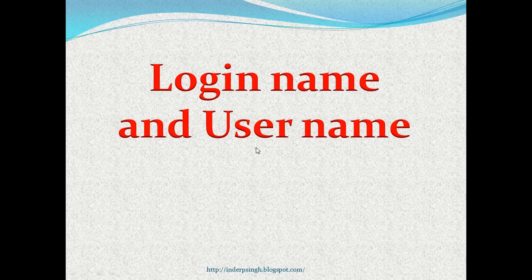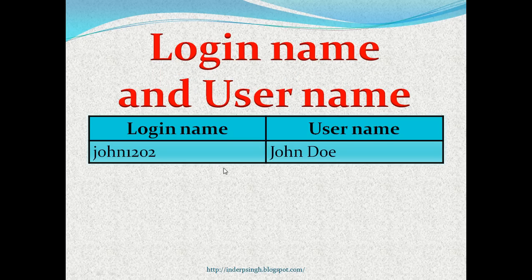Next, login name and user name. Login name is the string with which a user identifies a user internally. Login name may or may not be the same as user name. The user name is a string which the system displays to the user and communicates to other users. For example, John1202 may be a login name and John Doe the corresponding user name. The user would use John1202 to log into the system; however, the system would display John Doe in his inbox and in his messages.